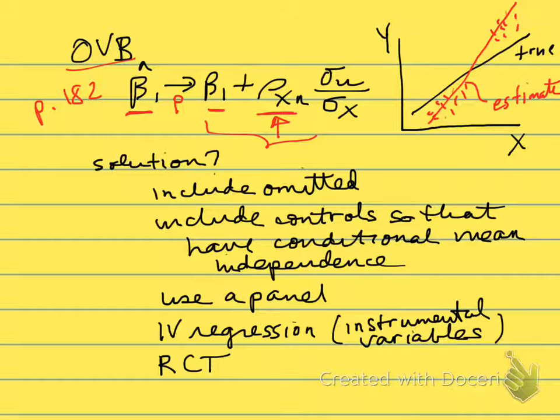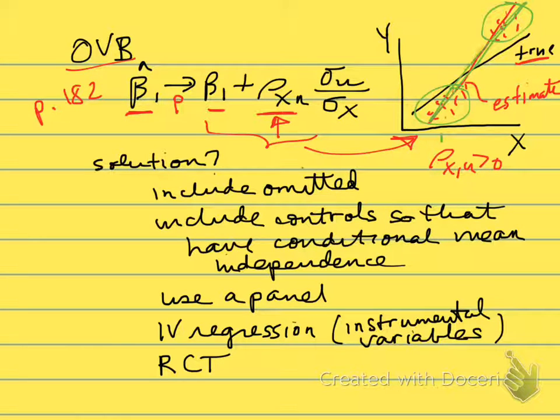Our β₁ hat is going to be bigger than our β₁, it's going to be too high. We can illustrate that with the simple diagram we've been using in class. If we have a true relationship between X and Y, but we have a correlation between X and U that's positive, that means for high values of X we're going to have errors that are high, that are positive. For low values of X, we're going to have errors that are low or maybe negative. So when we fit our line, we're going to fit a line that's too steep. Our beta is going to be too high. That's omitted variable bias.